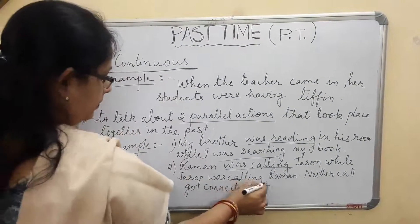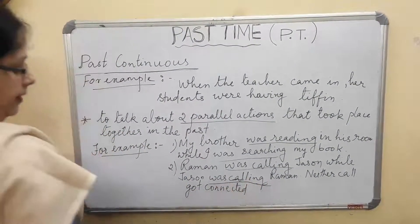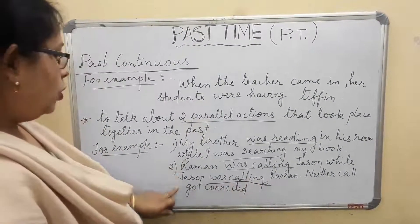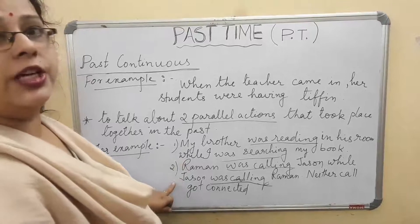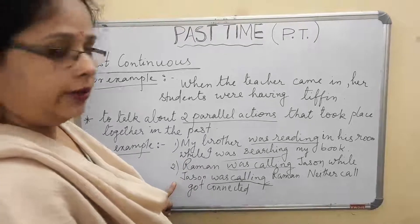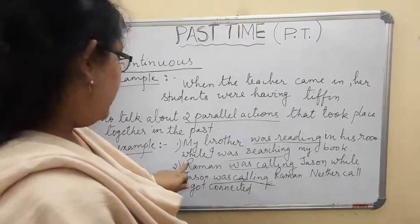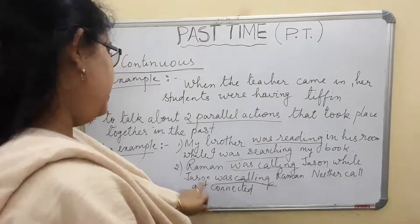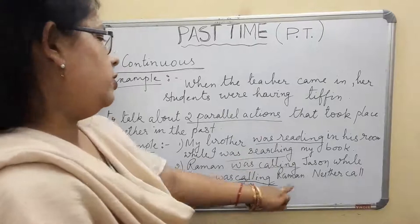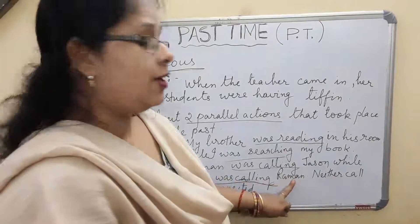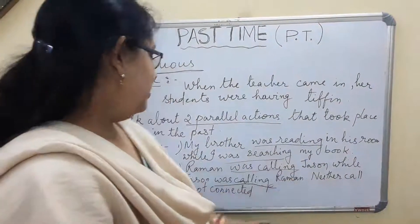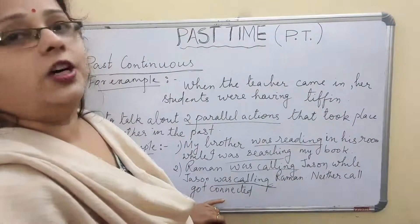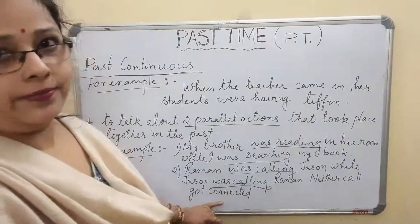Another example of parallel actions: 'Raman was calling Jason while Jason was calling Raman.' Both of them were calling each other at the same time over the phone. As a result, neither call got connected — a perfect example of two simultaneous actions.